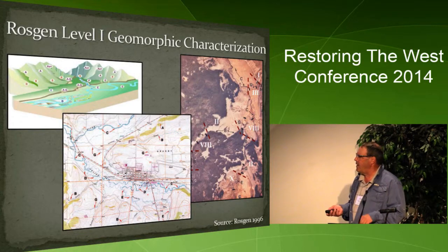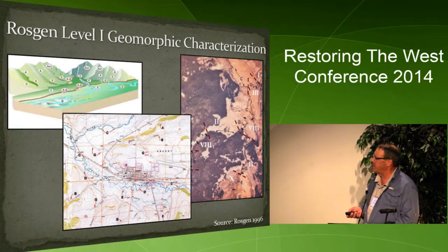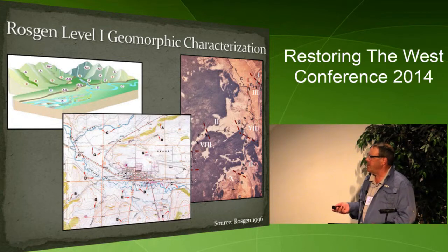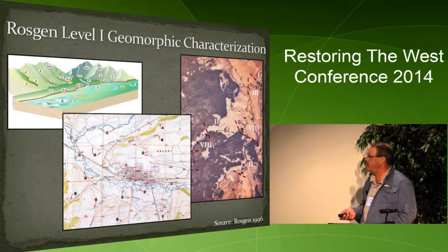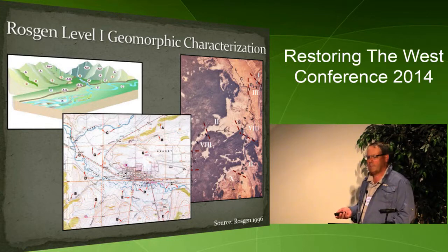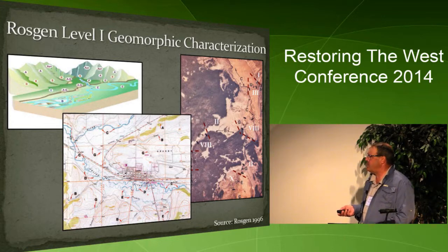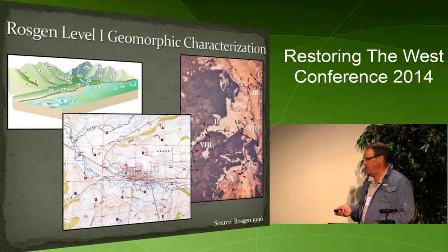You can get at this through Rosgen Level 1 geomorphic characterization. When dealing with large landscapes, you can do it through aerial photo, satellite imagery, or a topographic map exercise. If you're dealing with a smaller area, say like a small ranch, you could perhaps do it through some relatively simple field work.